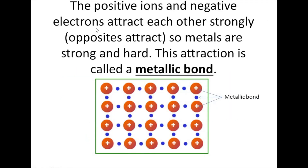The positive ions and negative electrons attract each other because opposites attract. That's what makes the metallic bond — positive attracting negative, attracting positive, attracting negative, and so on.